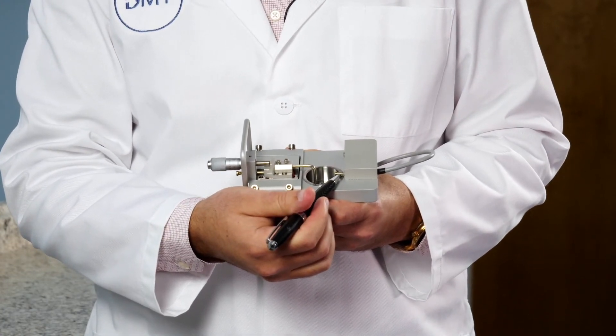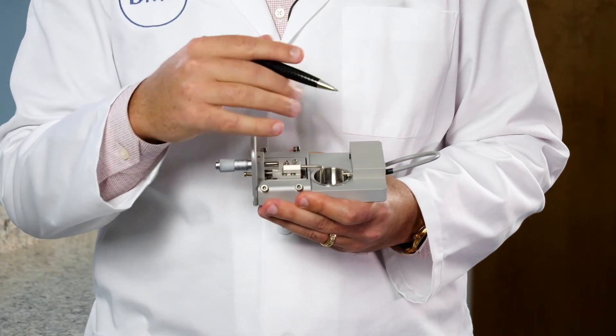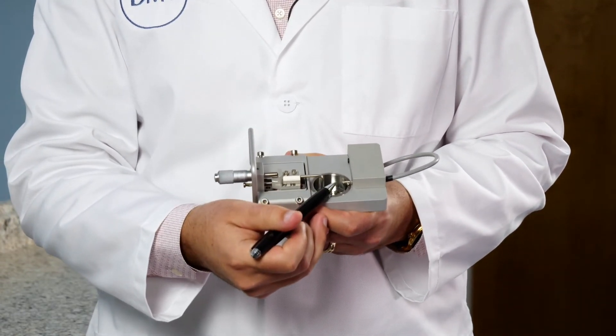If you loosen the back screw on the transducer side, that arm will swing back and forth. And all you really want is this side to be flat in the chamber.